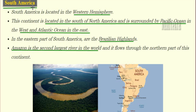Moving on to South America, this continent is located in the western hemisphere, to the south of North America. It is surrounded by the Pacific Ocean in the west and the Atlantic Ocean in the east. In the eastern part of South America we have the Brazilian Highlands. The major river flowing in South America is the Amazon River, which is the second largest river in the world.